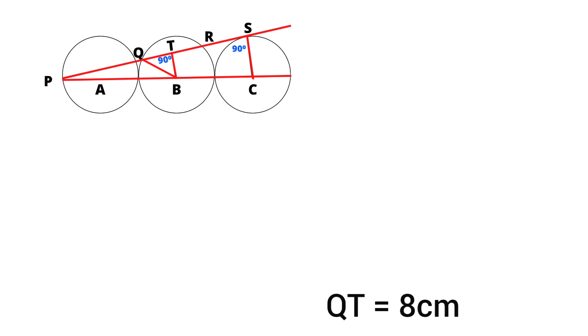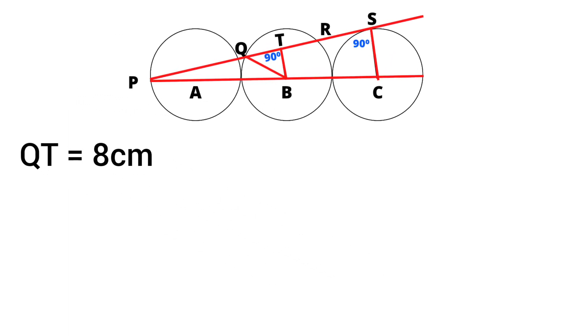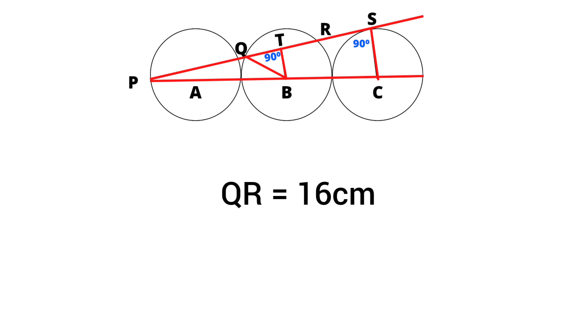We know that T is the midpoint of QR. So QR equals 2 times of the QT. So QR equals 2 into 8 which equals 16 cm. That is the length of chord QR.